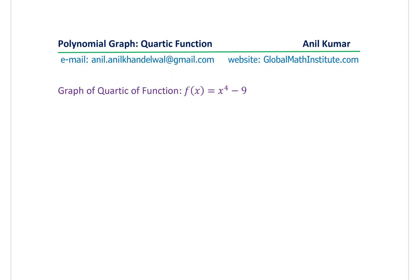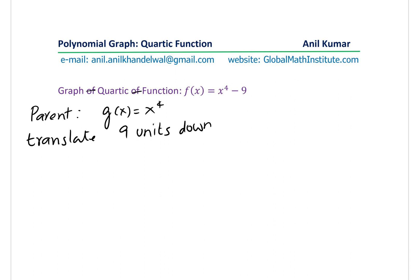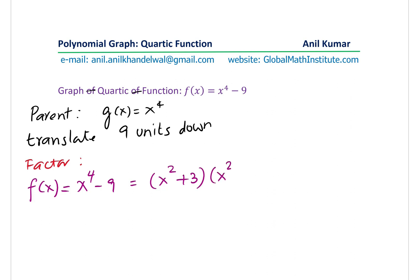The question here is to graph the quartic function f(x) = 2x⁴ - 9. We notice there is a translation of 9 units down. We can begin with the parent function g(x) = x⁴ and then translate it 9 units down. Alternatively, we can factor and then sketch. Writing the function as f(x) = x⁴ - 9, we can use difference of squares to get (x² + 3)(x² - 3).